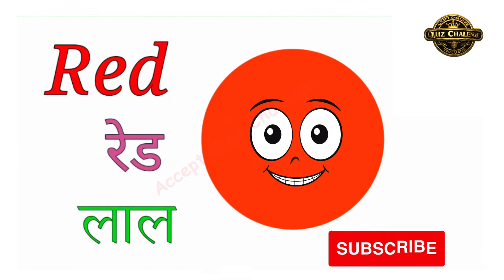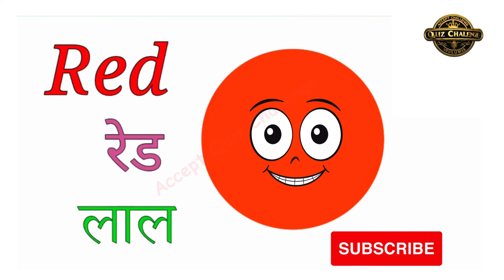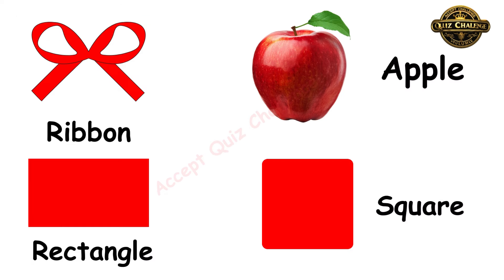This is the red color, R-E-D. Red means laal. Let's see the example of red color. Ribbon is red, apple is red, rectangle is red and square also is red.